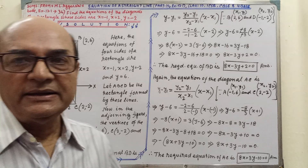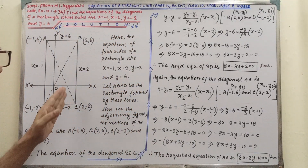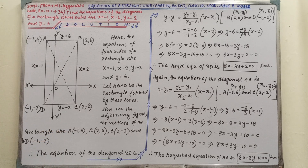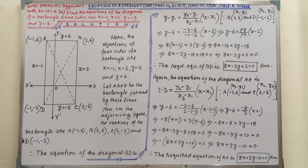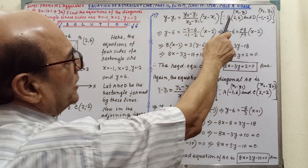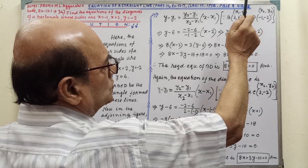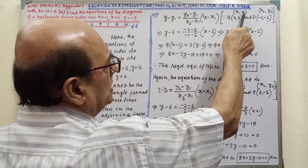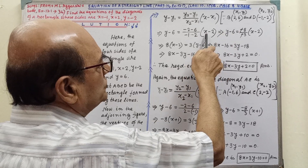I think it is clear. After getting the coordinates of the vertices, then it will be simple. We have to understand clearly how we got those coordinates. Now, the equation of the diagonal BD — the line passing through two points B and D. The equation will be: y minus y1 equal to y2 minus y1 divided by x2 minus x1, into x minus x1. Coordinates of B are 2, 6, and coordinates of D are minus 1, minus 2. If you label them x1, y1 and x2, y2, it will be easier to substitute values.